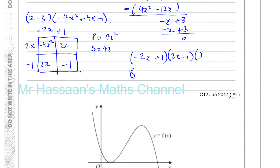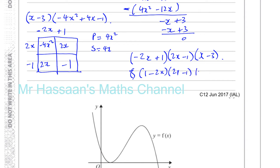So we've got x minus 3 times minus 2x plus 1 times 2x minus 1. That gives you minus 4x squared, and when multiplying out, minus 4x squared plus 2x plus another 2x and minus 1. So this is now fully factorized. I could write this as 1 minus 2x times 2x minus 1 times x minus 3. That's perfectly fine. So that's f of x fully factorized.